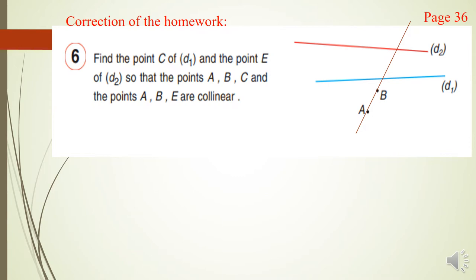The point of intersection of AB with D1 is called the point C. Here is the point C, and the point of intersection of AB with D2 is called E. That's it.